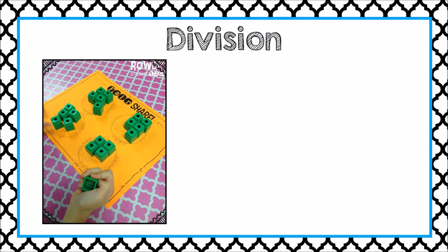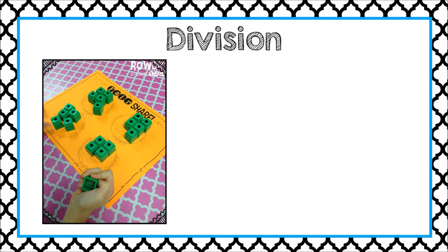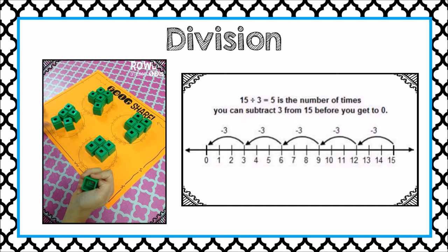First, when we divide, we could be creating fair shares, meaning that we put amounts into equal groups. Or secondly, we could be doing repeated subtraction, or repeatedly taking away groups. As I model the Area Model Division Strategy, I am going to think about the second type of division, where I repeatedly take away groups until I'm left with nothing.